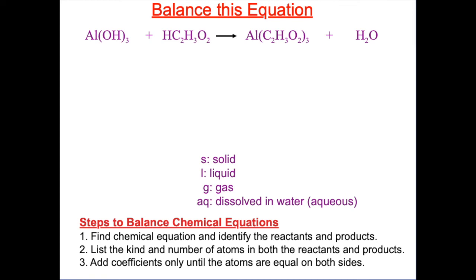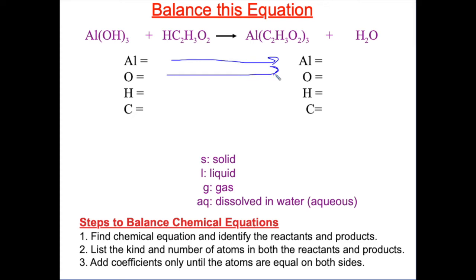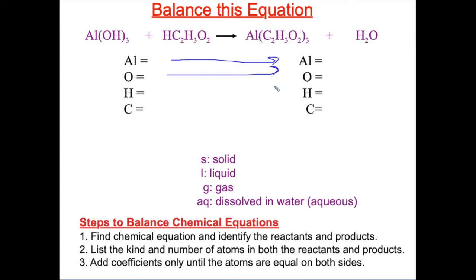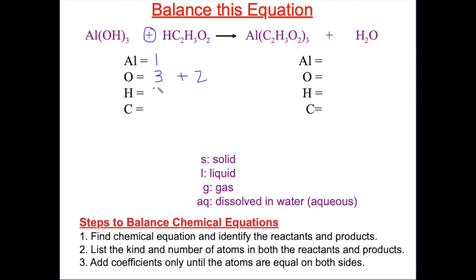Let's try another example. The reactants are on the left and the products are on the right. On the left-hand side, I see aluminum, oxygen, hydrogen, and carbon. I like to keep all the elements across from each other, writing them in the same order on both sides. On the reactant side: one aluminum, three plus two oxygens, three plus four hydrogens, and two carbons.